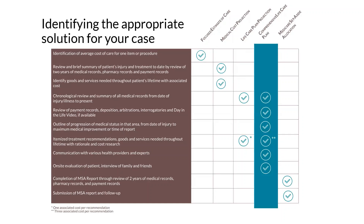The last product available is a Medicare set-aside allocation. We complete MSA reports through review of two years of medical records, pharmacy records, and payment records, identifying which items would be covered under Medicare and their associated costs. We also submit MSA reports and handle the follow-up questions that often occur during the submission process.